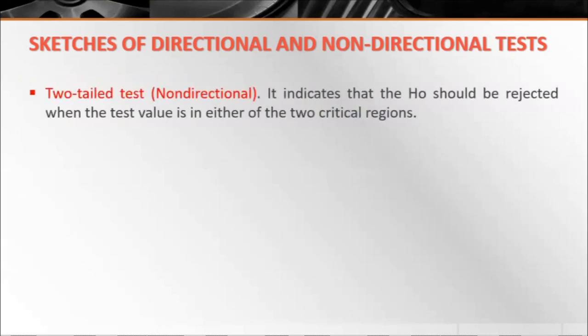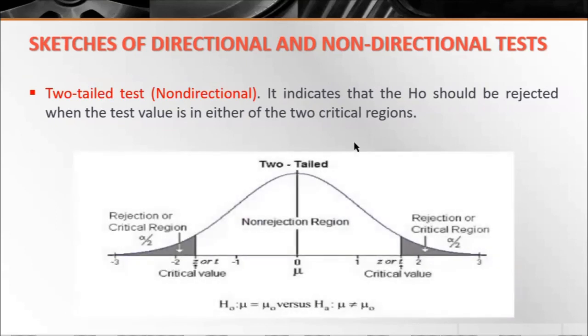Two-tailed test is non-directional. It indicates that the null hypothesis H₀ should be rejected when the test value is in either of the two critical regions. This is the graph of non-directional. Notice that we have two shaded regions, left and right. So if our probability falls in those areas, the null or the given μ is rejected. When we have this graph presentation, we call it a two-tailed test. It's easy to identify: if the null hypothesis is μ = μ₀, then the alternative will be μ ≠ μ₀.